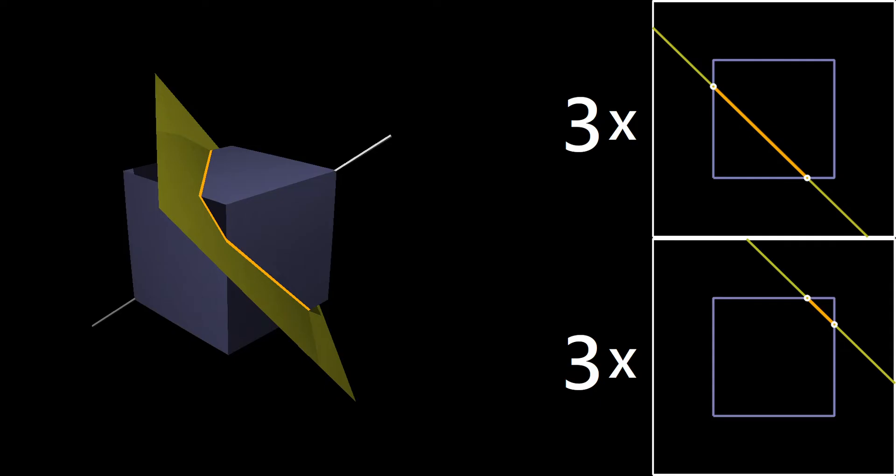One way of understanding the intersection of a cube and a plane is by understanding the intersection of the plane with each of the six faces of the cube. Now this reduces mathematically to six 2D subproblems, each of which is the intersection of a line and a square. Now you can see that that actually is what I have over on the right, except that I only have two such subproblems.